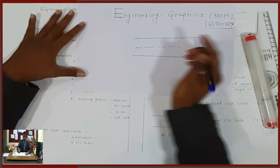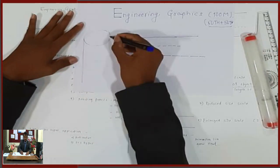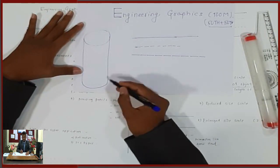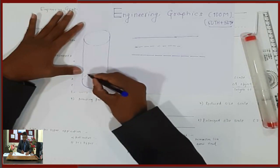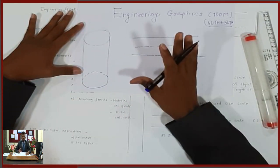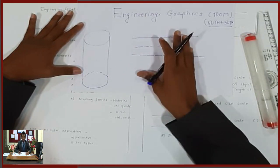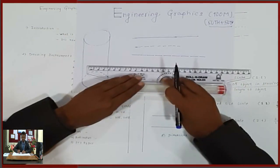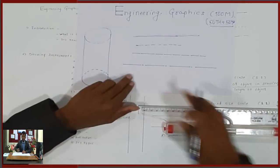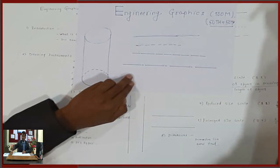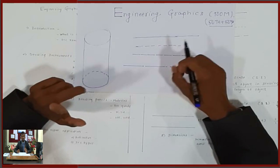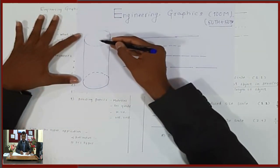For example, consider a cylinder. The hidden line shows the hidden part of an object — the part that is not directly visible is shown using a hidden line.